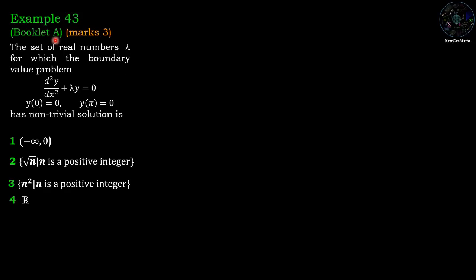Example number 43 from booklet A, marks 3. Find the set of real numbers λ for which the boundary value problem y'' + λy = 0 with y(0) = 0 and y(π) = 0 has a non-trivial solution. Options: (-∞, 0); {√n : n is a positive integer}; {n² : n is a positive integer}; the set of all real numbers.